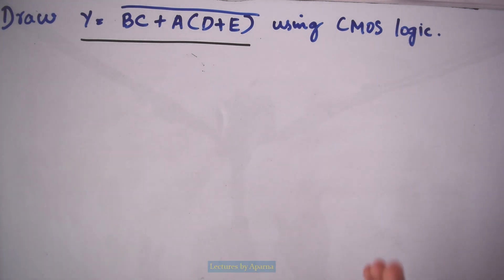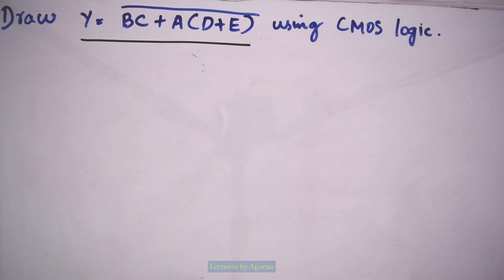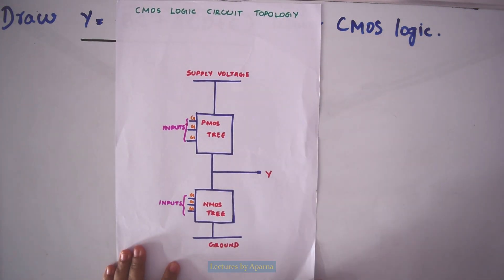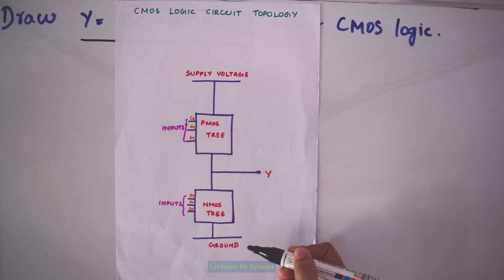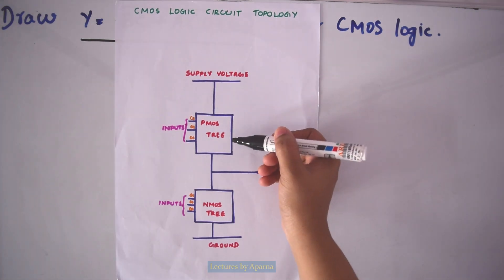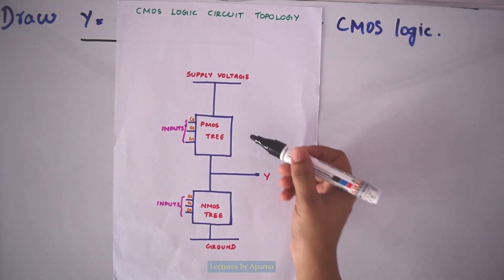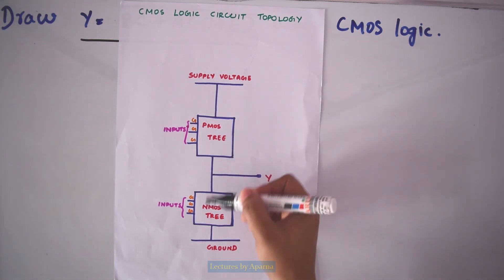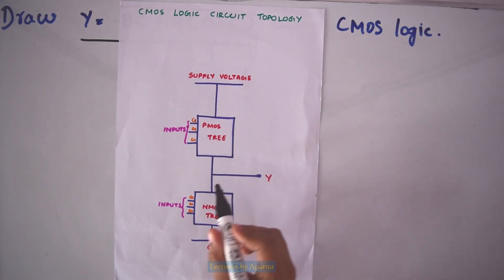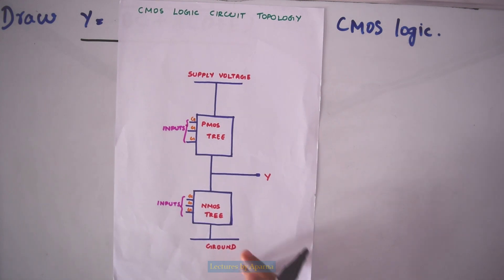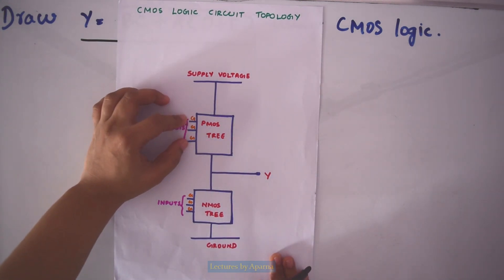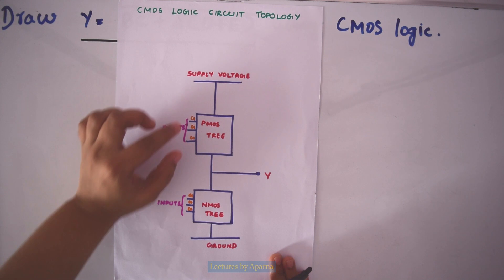The general topology of a CMOS logic circuit is as follows. There will be a supply voltage and ground. There will be a PMOS tree at the top portion and an NMOS tree at the bottom portion. In the portion connecting the PMOS tree and the NMOS tree, we take the output. Inputs will be given to the gate of the transistors in both trees.